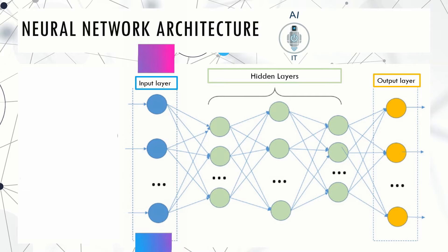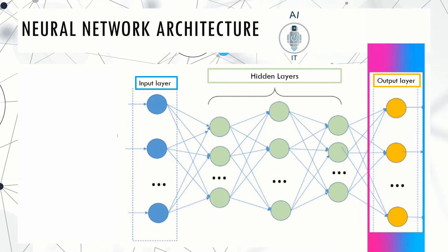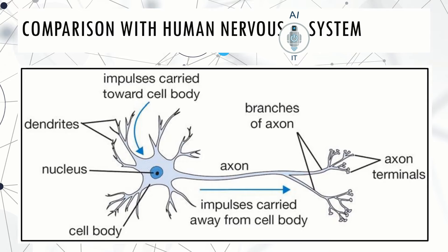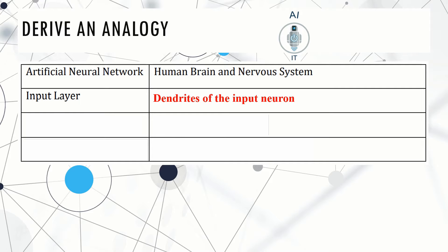We can compare the same with the artificial neural network, wherein the input layer gets the data which it passes on to the nodes in the hidden layer. The nodes then perform specific actions on the data and pass on the processed information to the subsequent layers. In the end, the final processed data reaches the output of the artificial neural network system. We can derive an analogy of the components of artificial neural networks with the human nervous system.